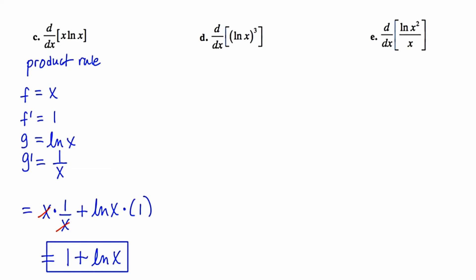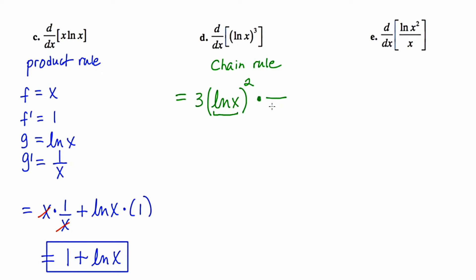In example 7d, we're asked to find the derivative of the natural log of x expression cubed. This is going to require the chain rule. To start, I'm going to bring the 3 down in front, rewrite the base as the natural log of x, drop the power from 3 to 2, and then multiply by the derivative of the inside. Taking the derivative of this natural logarithmic expression, the argument x goes in the denominator and its derivative goes in the numerator. So in the end, the elements on top are 3 times the natural log of x squared, and we have an x in the denominator. Nothing can cancel, so this problem is done.